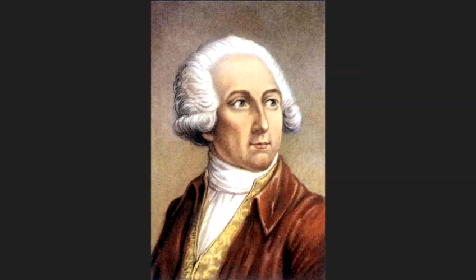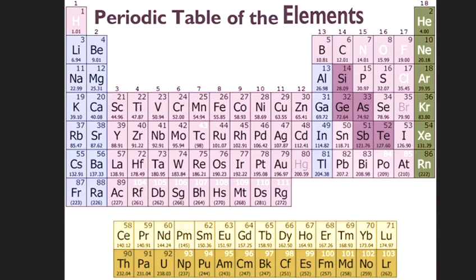As well as a fifth element, the ether, of which supposedly the heavens were made. In 1789, the French scientist Antoine Lavoisier came up with a list of 33 elements. These elements were categorized according to a new definition of element — any substance that could not be broken down into a simpler substance. Water, for example, could be broken down into hydrogen and oxygen and therefore was not an element. Hydrogen and oxygen were, because they could not be broken down any further.